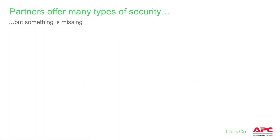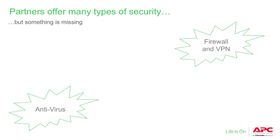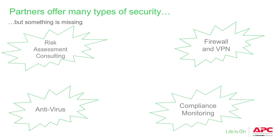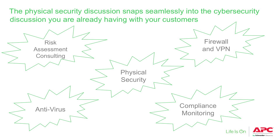So the question is, how do you prevent that from happening? Every day, as a partner, you're talking about cybersecurity, and I'm sure you offer many cybersecurity solutions to your customers — whether technical offers like antivirus, firewall, and VPN, or consulting services like risk assessment or compliance monitoring. But there's one type of security that many partners miss, and that's physical security. Physical security is really the start of cybersecurity, because this is where the physical access of your buildings, your racks, and your rooms all begins. Make sure that in your cybersecurity discussions with customers, you're including that physical security discussion.